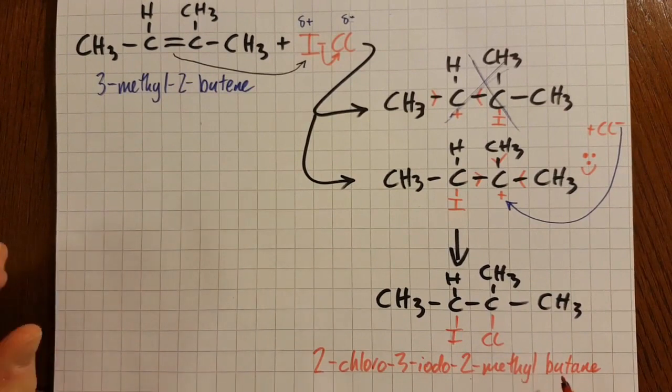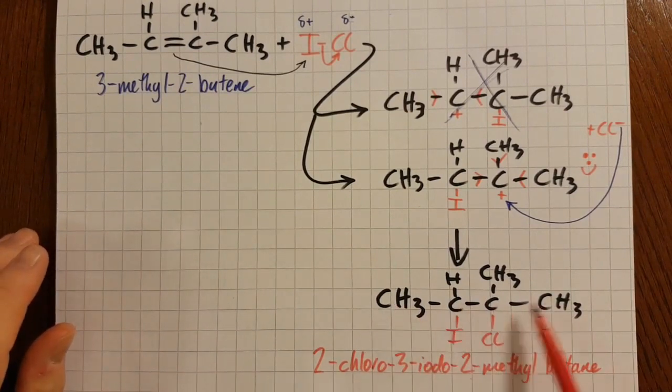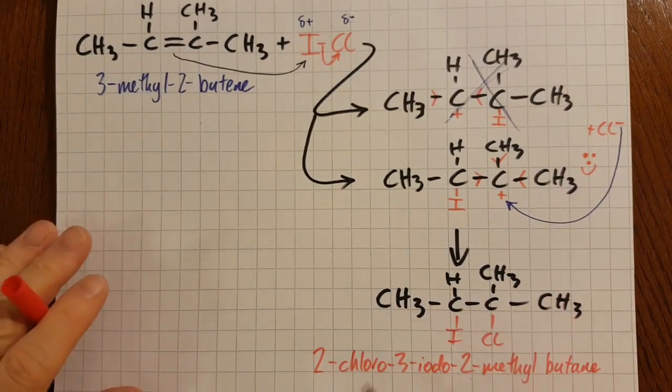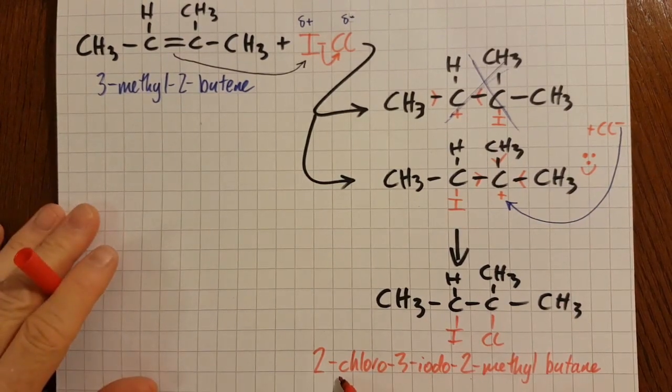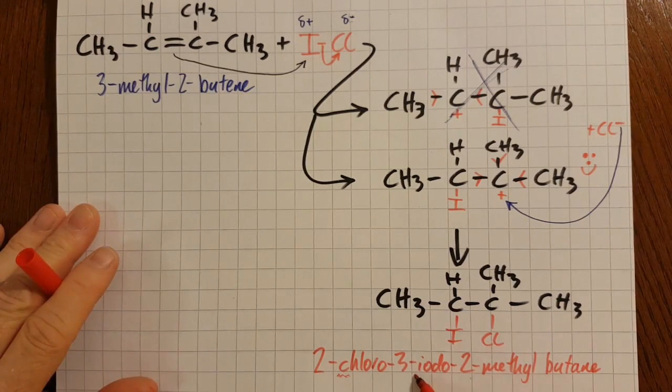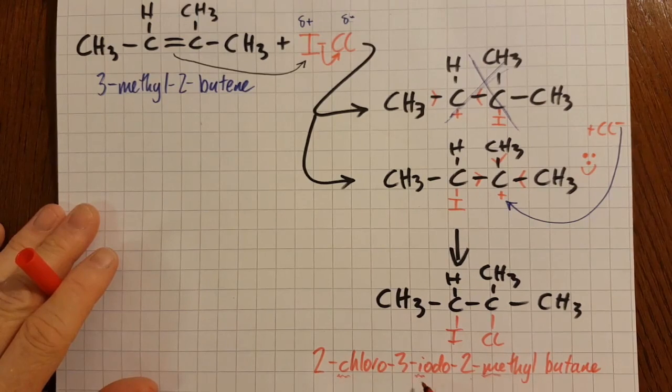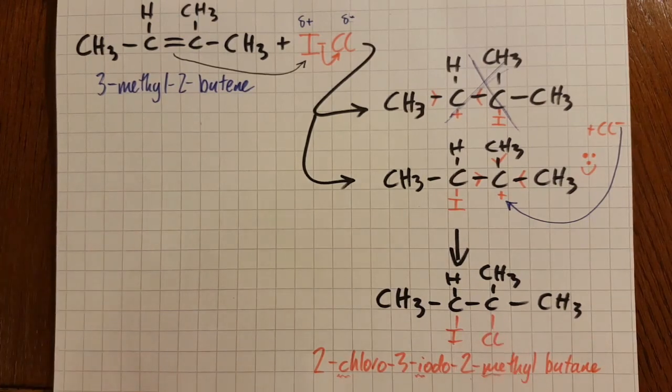So just to recap the naming: butane, longest chain is four. And I'm going to try to do it alphabetically. Almost always IB doesn't care, but sometimes they do. C, I, M—so you have to do it alphabetically, not by the numbers but by the first letter of the branches. And we're done.